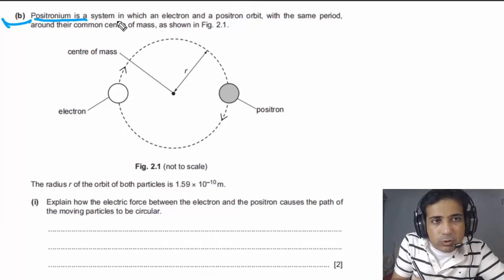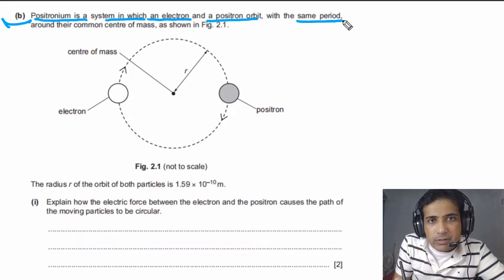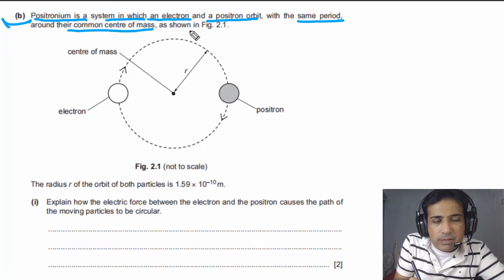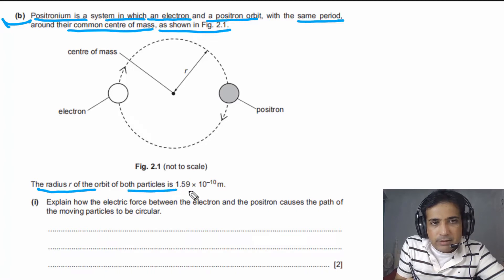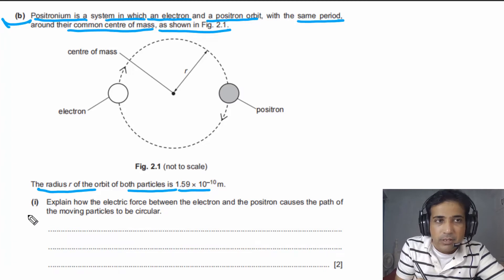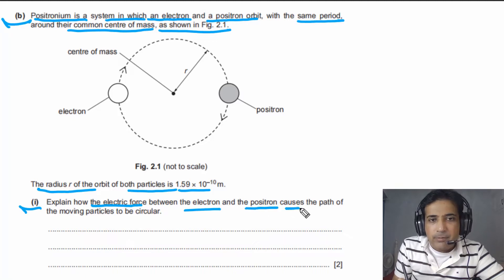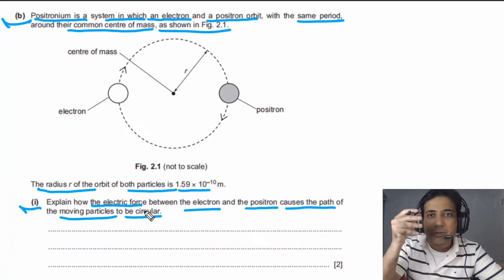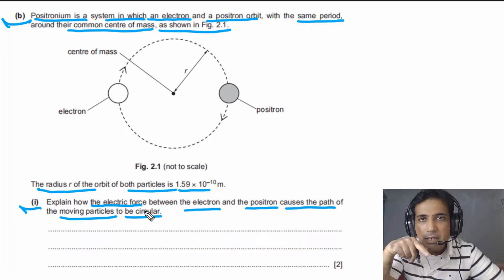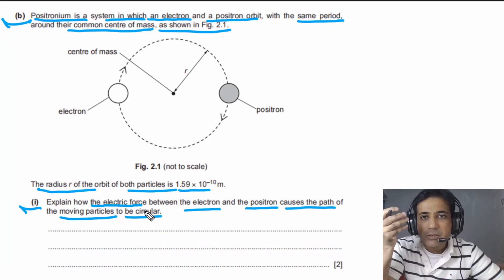For part B, it is given that positronium is a system in which an electron and a positron orbit with the same speed about their common center of mass, as shown in figure 2.1. The radius R of the orbit of both particles is 1.59 × 10⁻¹⁰ meters. For part B1, we need to explain how the electric force between the electron and the positron causes the path of the moving particles to be circular — simply, why these particles are moving in a circle.